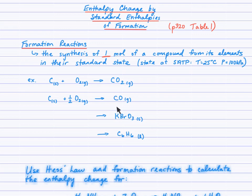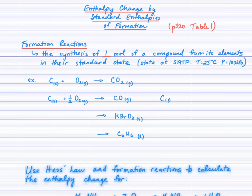If we wrote a formation equation for carbon monoxide, again it's made from its elements — carbon solid and O₂ gas. When we balance, we notice there's one carbon on each side but one oxygen on the right and two on the left. You might be tempted to balance with a two, but we need to maintain one mole of the product. Balancing first gives coefficients of 2, 1, 2.